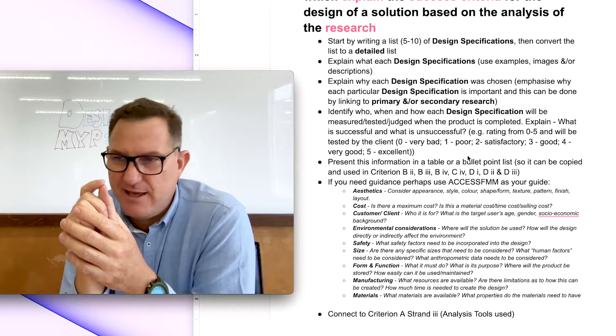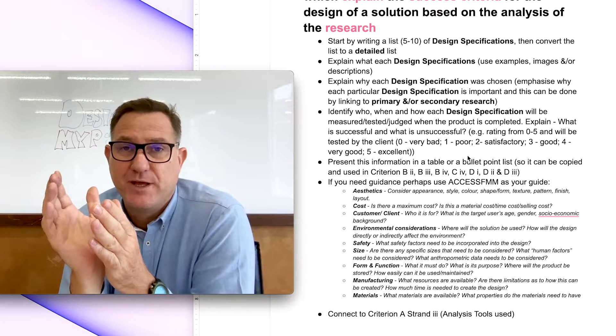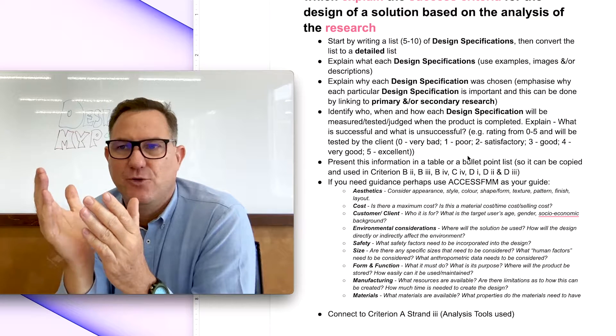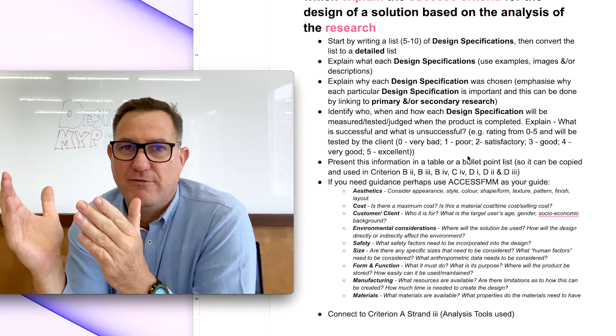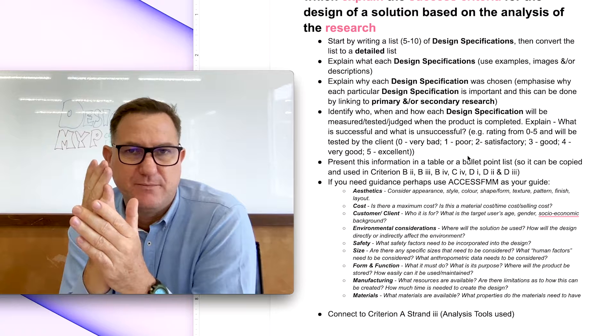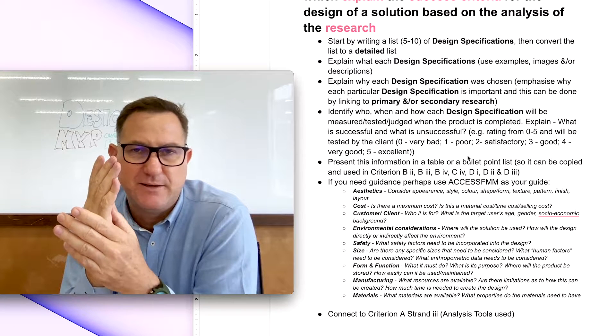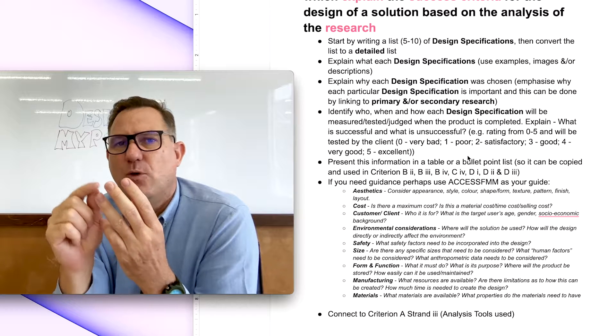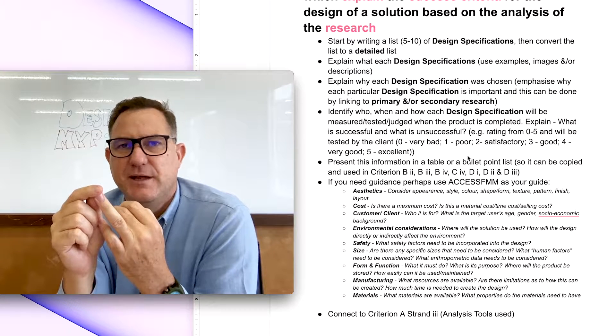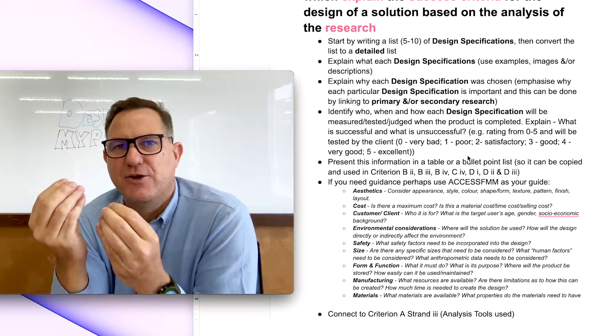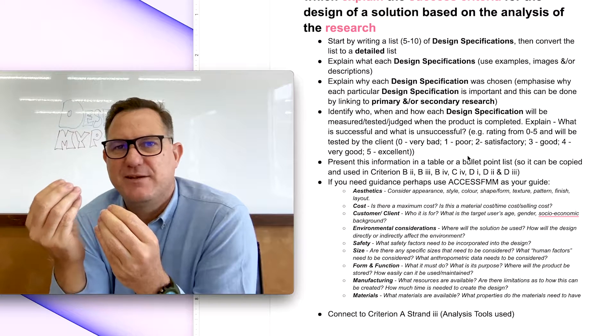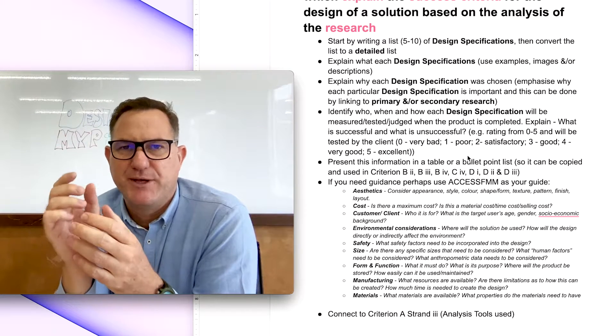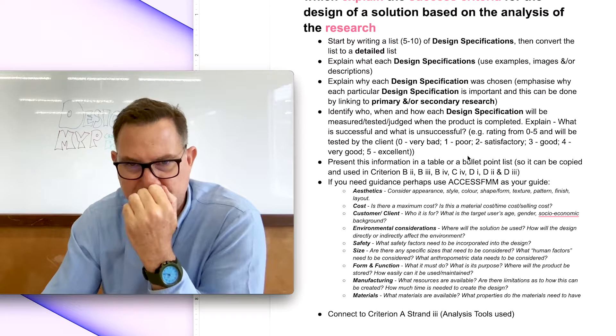And when they test it, how do they grade it? So is it a pass fail? Or is it a rating from one to five? Five being excellent. One being not very good at all. Zero meaning not done. So you need to talk about who's going to test it, when they're going to test it, why they're the person that's going to test it, and how are they actually going to measure it? Is it a pass fail, A, B, C, D, E, F, whatever it might be. So give them a measuring scale.